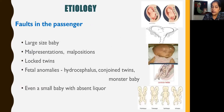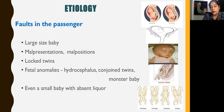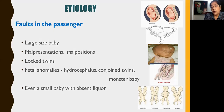Faults with the passenger — that is the baby. The baby could be of large size, unable to descend. It could be a malpresentation or malposition. Locked twins — when the first baby is breech and has delivered but the head is inside, getting interlocked with the forecoming head of the second baby — or fetal anomalies in which the head is too large, like hydrocephalus, or conjoined twins where overall volume is large. Even a smaller baby with absent liquor may cause obstruction.